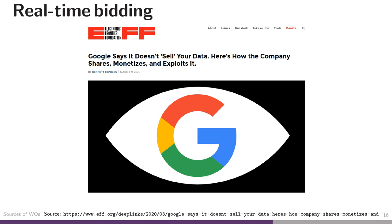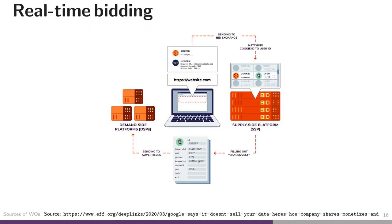Another particularly troubling source is real-time bidding. There's a great article by the EFF covering how Google is at the center of this. When advertisements are shown by Google and other big players online, there is a network of advertisement providers giving information about an ad about to be shown, and they're allowed to bid on it. This process takes on the order of a few hundred milliseconds, and having the ability to observe offers or show advertisements is also a great website oracle source.